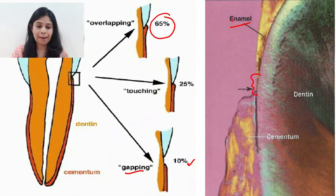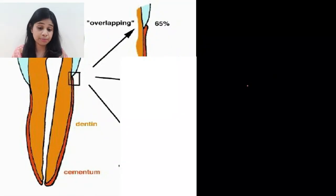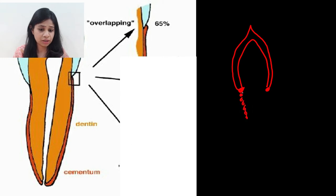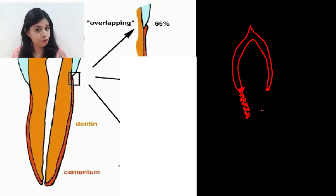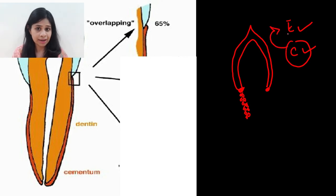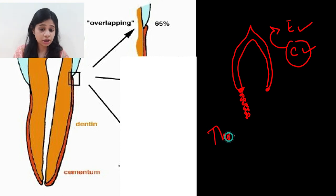During tooth development, after enamel formation, a layer of reduced enamel epithelium forms. At the cervical area, the Hertwig's epithelial root sheath forms, which further disintegrates and causes cementum formation. So enamel is formed first, after which cementum formation occurs — and because of this sequence, cementum in most cases overlaps a layer of enamel. The data on these relationships was established through light microscopic studies by Thorson in 1917.